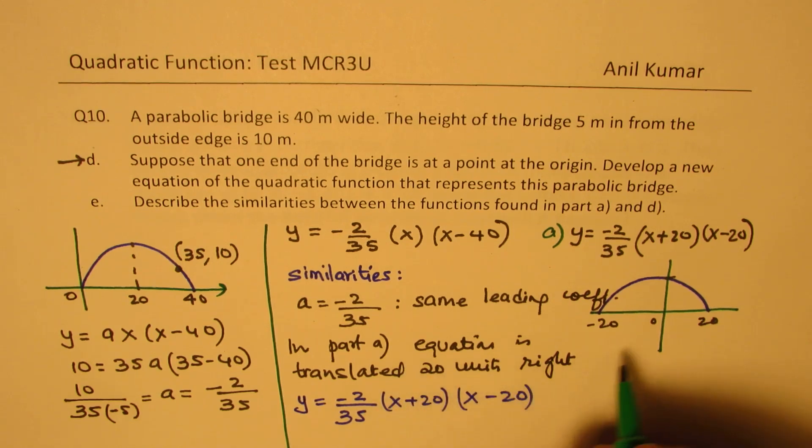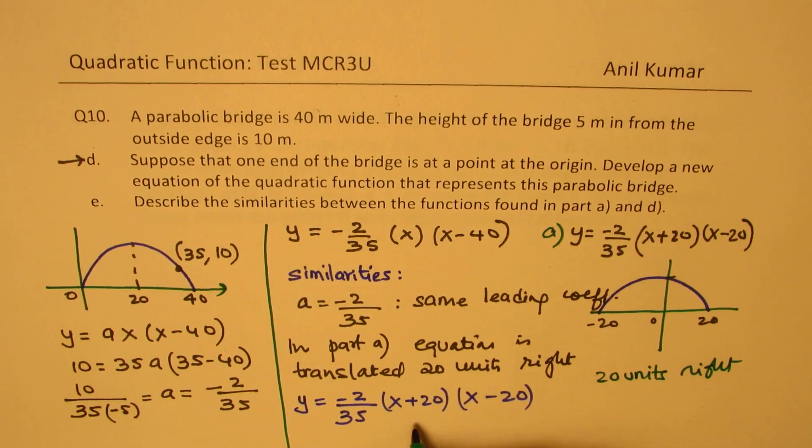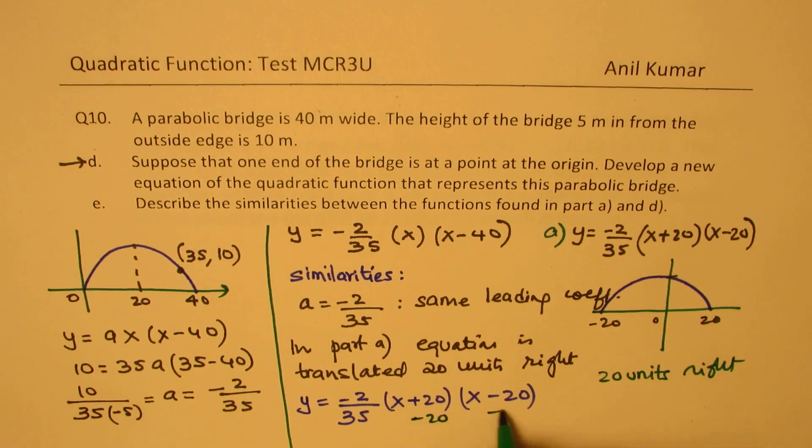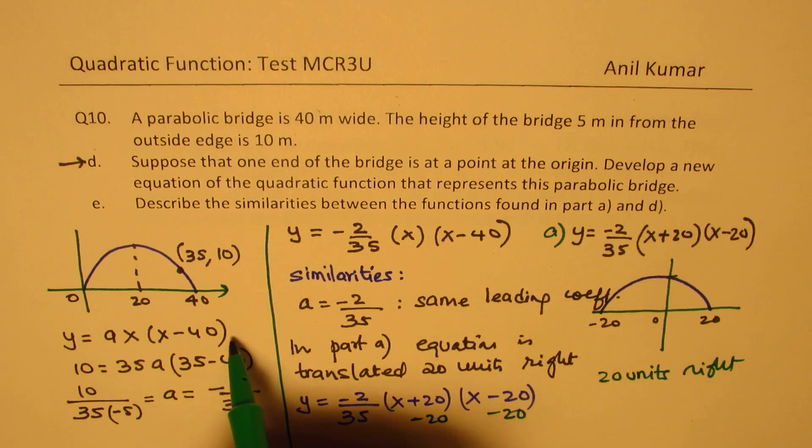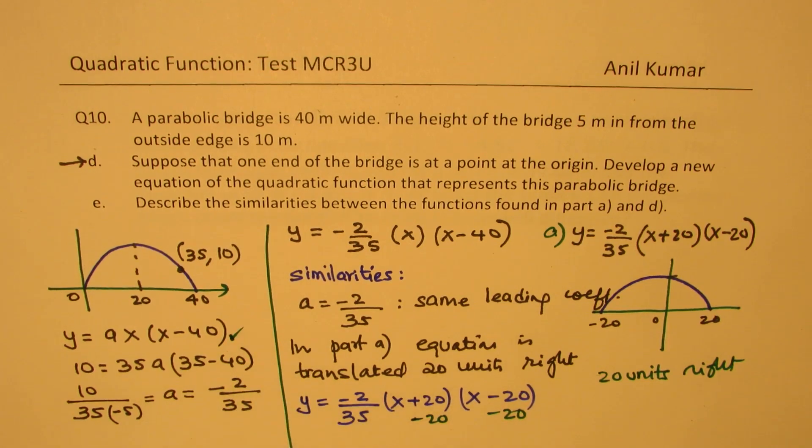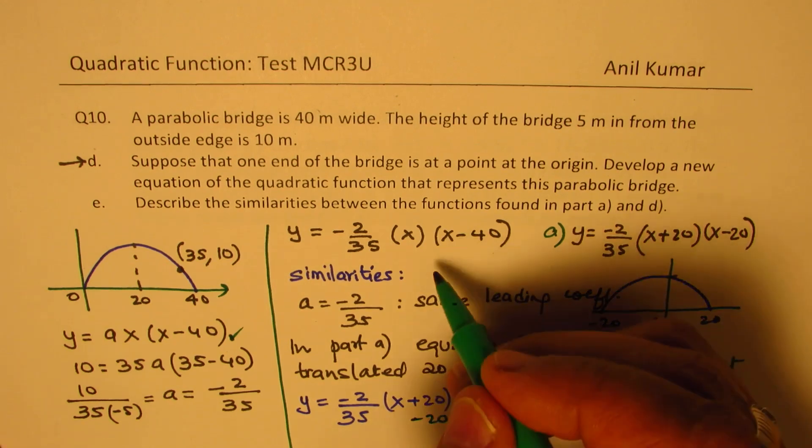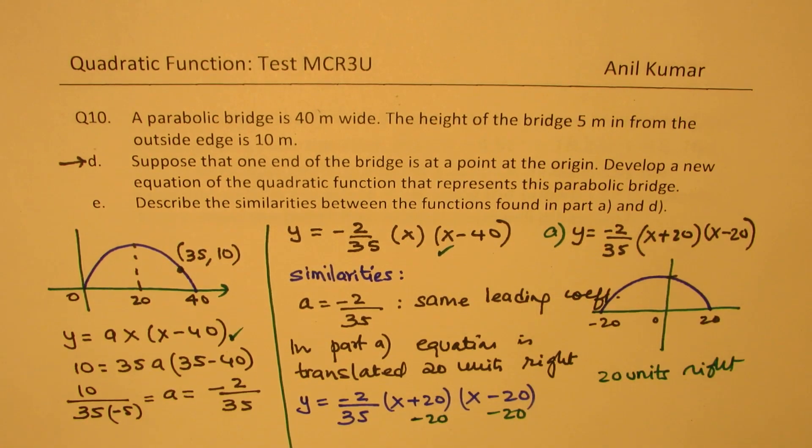And if I do, see, translate 20 units, right, so 20 units, right, then we have to, what do we do? We add minus 20, right? So 20 units, right? So we do minus 20 and minus 20, and what we get is this equation, right? The first equation, which is given here, correct? So that is how we could explain the similarities.